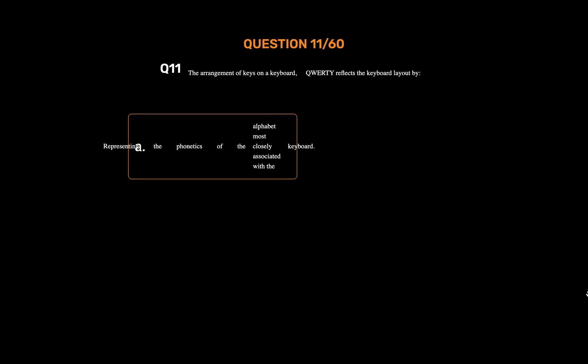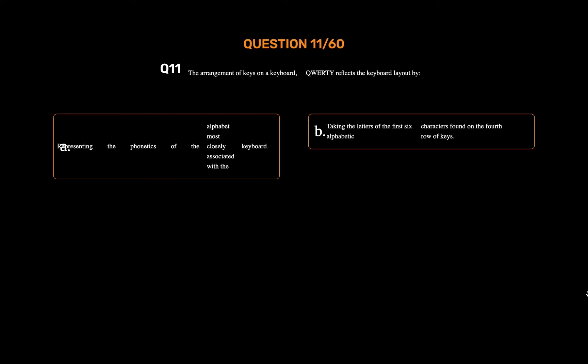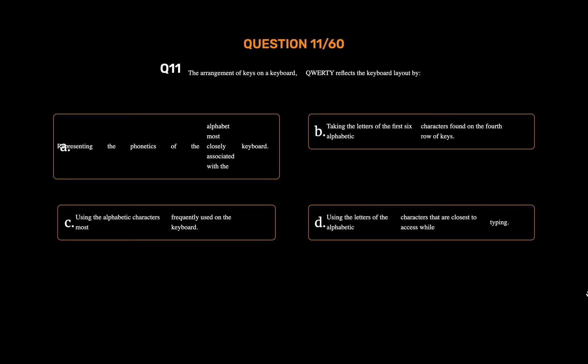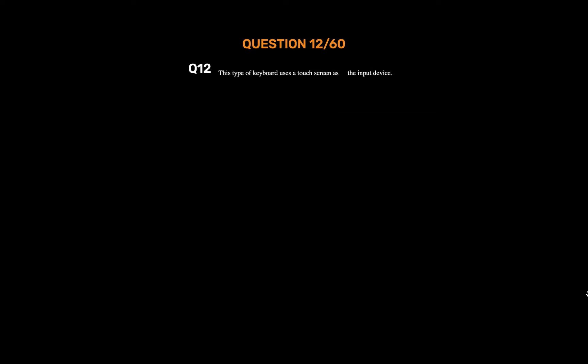Question number eleven. The arrangement of keys on a keyboard — QWERTY reflects the keyboard layout by: Option A: Representing the phonetics of the alphabet most closely associated with the keyboard. Option B: Taking the letters of the first six alphabetic characters found on the fourth row of keys. The correct answer is Option B.